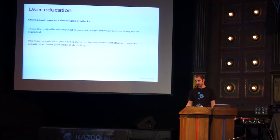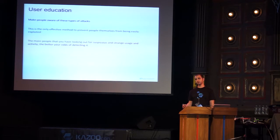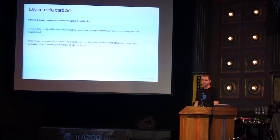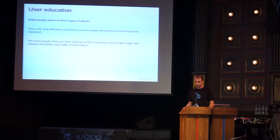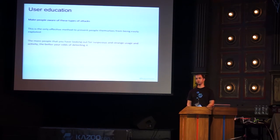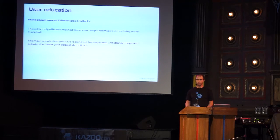Finally, user education. This is important because most attacks against users can't be guarded against in an automated fashion. Informing people — say, if you're getting a bunch of calls from extension 100, they're probably not legitimate. Also, just informing people in general that you can't trust caller ID. The more people that are aware of the possibilities, the more people are going to be at least somewhat on guard if strange things start happening.